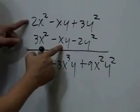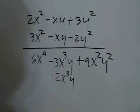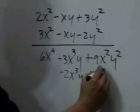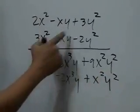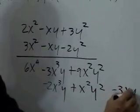So negative xy times 2x² is negative 2x³y. Negative xy times negative xy is positive x²y². And negative xy times 3y² is negative 3xy³.